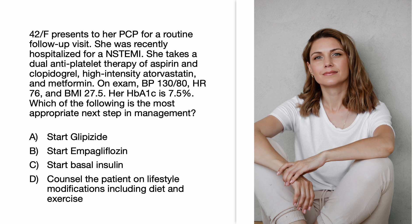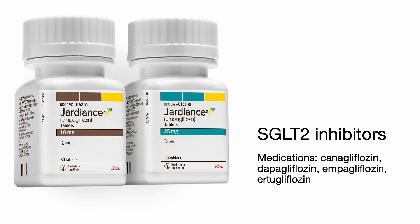Which of the following is the most appropriate next step in management: start liraglutide, start empagliflozin, start basal insulin, or counsel the patient on lifestyle modifications? The correct answer is B, start empagliflozin. This patient has type 2 diabetes with established atherosclerotic cardiovascular disease — she recently had an NSTEMI. For patients with type 2 diabetes who have established ASCVD or kidney disease, an SGLT2 inhibitor or GLP-1 receptor agonist with demonstrated cardiovascular benefit is recommended. SGLT2 inhibitors include canagliflozin, dapagliflozin, and empagliflozin.